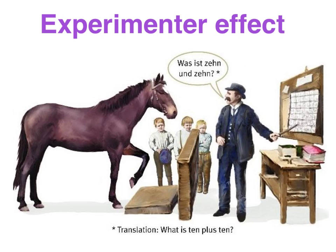An experimenter effect, on the other hand, is where the actions or characteristics of the experimenter may bias the results. A classic example of this is the Clever Hans experiment. Hans was supposedly an intelligent counting horse that would perform mathematical sums, his owner claimed. It was found through further analysis that Hans was actually reading the cues that the owner was inadvertently giving to the horse — so rather than actually counting three plus three, he was literally reading the body language of the owner. Therefore, the experimenter effect — even though the actions were unintentional — affected the DV.